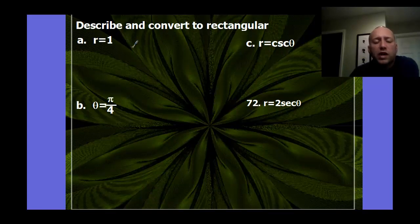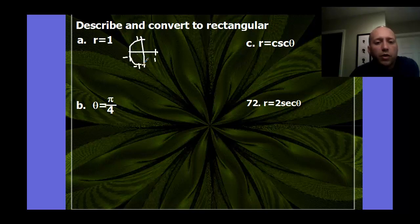Let's describe and convert to rectangular the other way. So this r equals 1. So this is saying that if I'm graphing in polar form, r is 1 means I have a distance away of 1. It doesn't matter if it's positive or negative. The distance is 1. So I look at that. I end up with this shape. It's a circle that has a radius of 1.